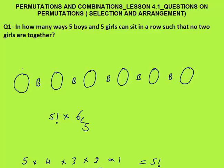Let's say in one of the cases these 5 seats are selected out of the 6 seats, so one seat is vacant — meaning those 2 boys will be together. The 5 seats selected out of 6 can be done in 6C5 ways. Now 5 girls on the 5 selected seats can be arranged in 5 factorial ways. That will be your final answer.